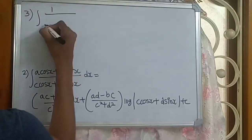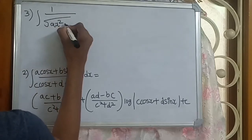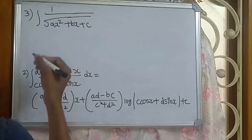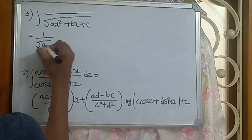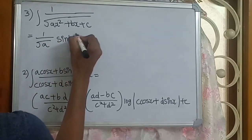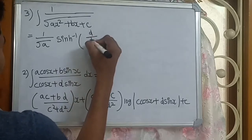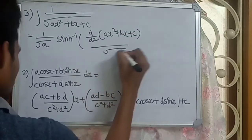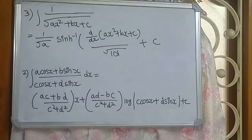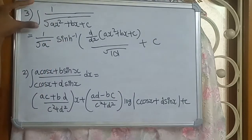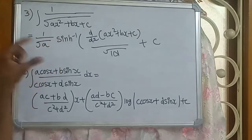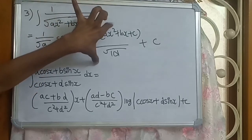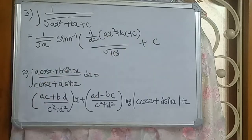Third formula: integration of 1 by root of Ax squared plus Bx plus C dx equals 1 by root A times sinh inverse of d/dx of Ax squared plus Bx plus C by root modulus of delta, plus C.